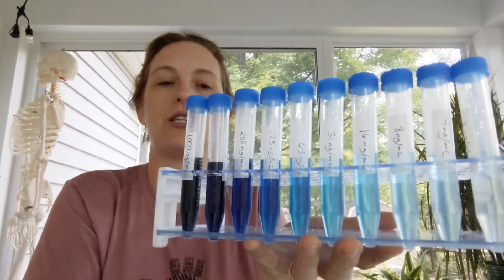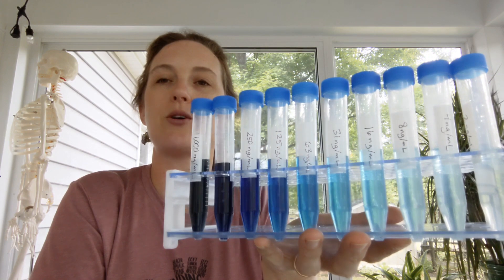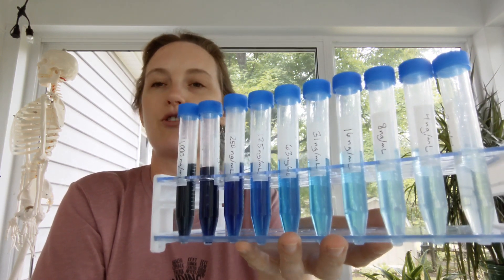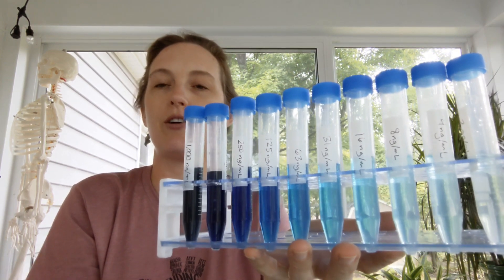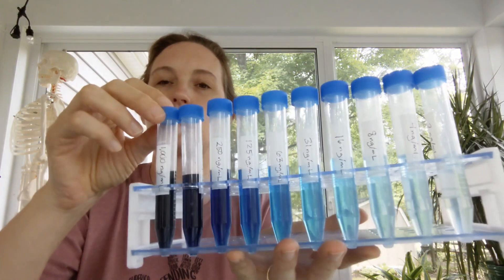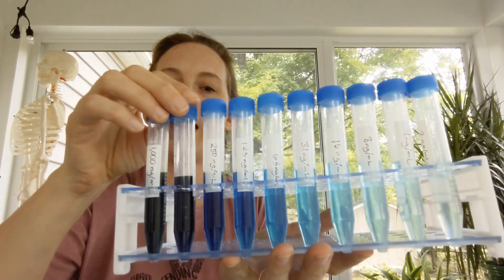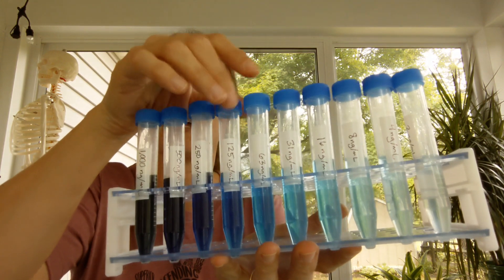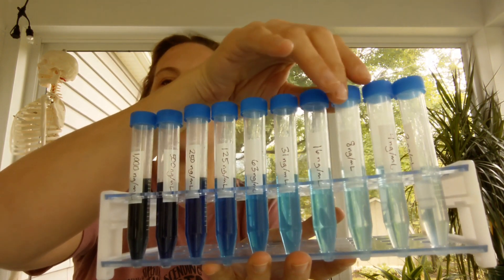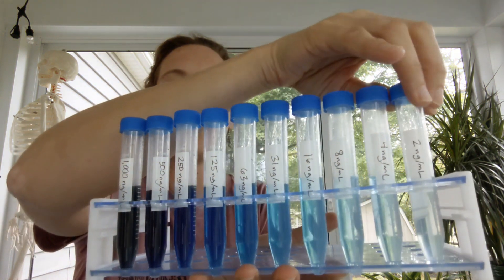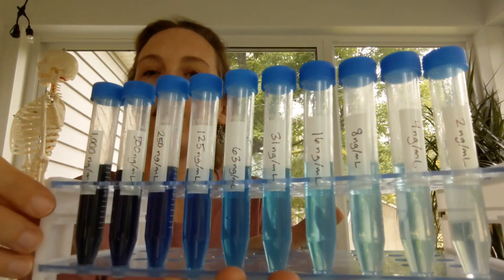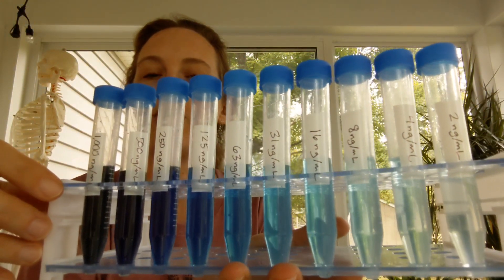You start by making a serial dilution, and this is so that you have controls with known concentrations that you can use to compare your unknowns to. And you start with the most concentrated, and then you usually dilute 50% each time. So you can see the number values going down on my tubes, and you can see the color concentration decreasing.